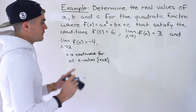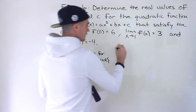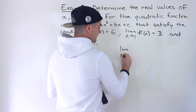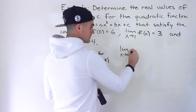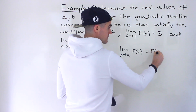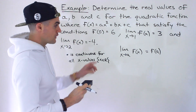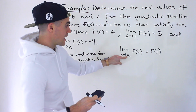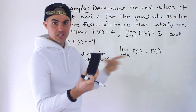If you remember from the definition of continuity: if a function is continuous at a certain x value, then we know the limit as x approaches a of that function is equal to f of a. If a function is continuous at an x value of a, then the limit as x approaches a of f of x is equal to f of a.